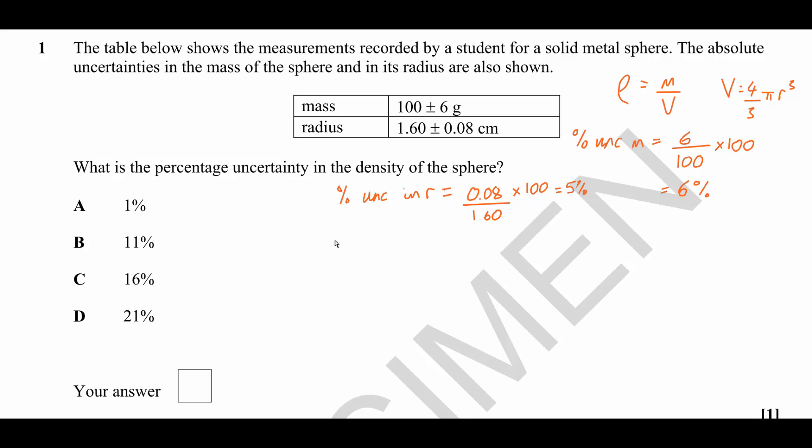So the percentage uncertainty in V is going to be equal to 5%, which is the uncertainty in R, multiplied by 3 because we are cubing the radius, which of course gives us 15%.